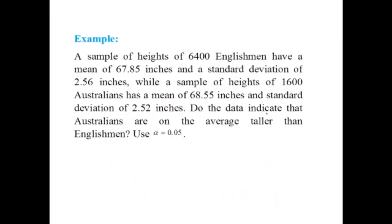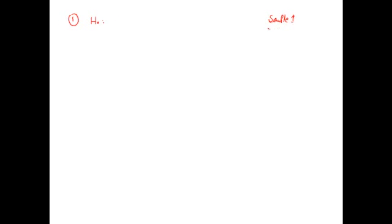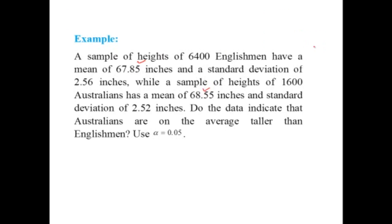In this case the standard normal variable becomes: z equals (x-bar1 minus x-bar2 minus (mu1 minus mu2)) divided by the square root of (S1-squared over n1 plus S2-squared over n2). Let us do some examples. A sample of heights of 6400 English men had a mean of 67.85 inches and standard deviation of 2.56 inches, while a sample of 1600 Australians had a mean of 68.5 inches and standard deviation 2.52 inches. Do the data indicate that Australians are on average taller than English men, using level of significance 0.05?